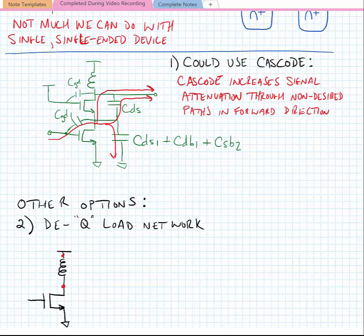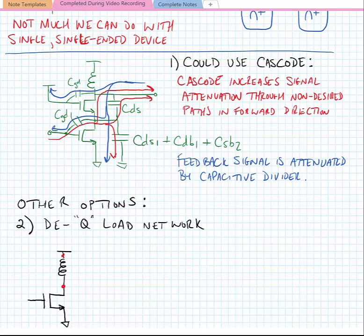But also, as the signal hits the output and maybe some of it is reflected backwards, it's going to increase the attenuation in the backwards path as well. I'm going to show that in blue. By providing alternate paths for the signal to take as it reflects back from the output towards the input, we attenuate the feedback signal that would make it all the way back to the input. And this helps with stability.